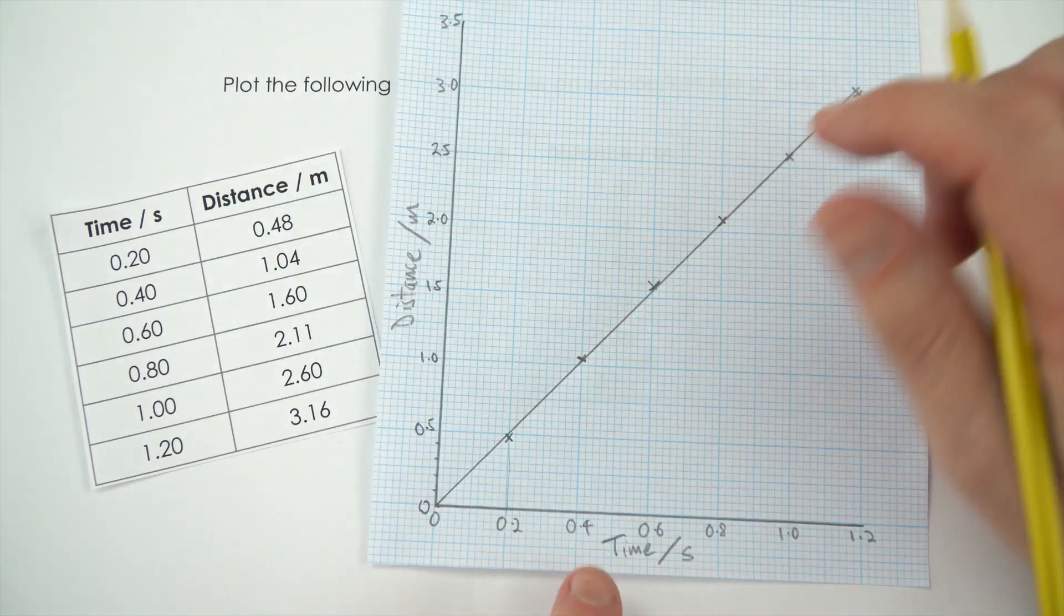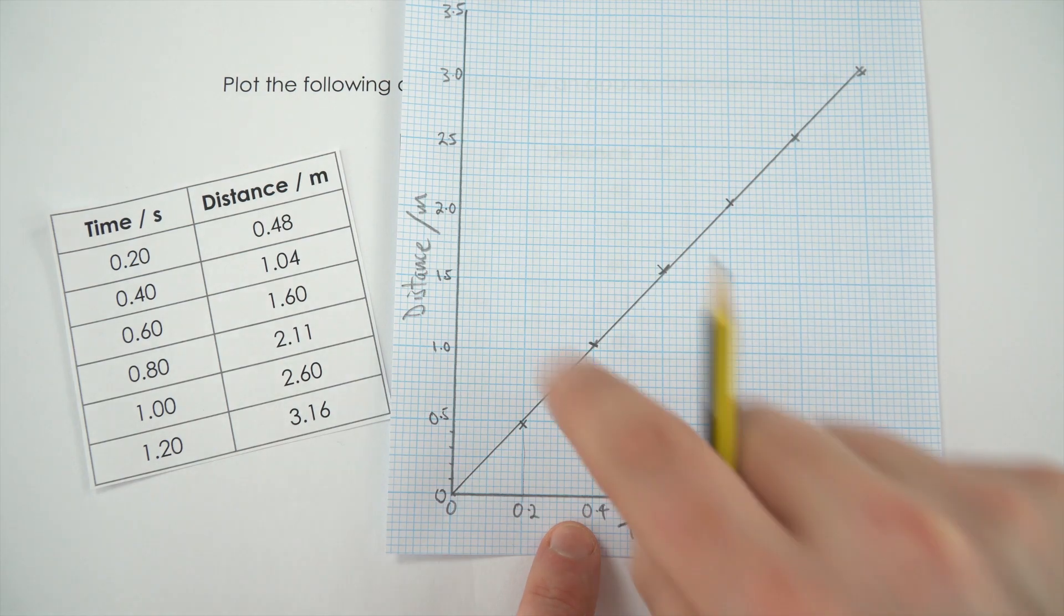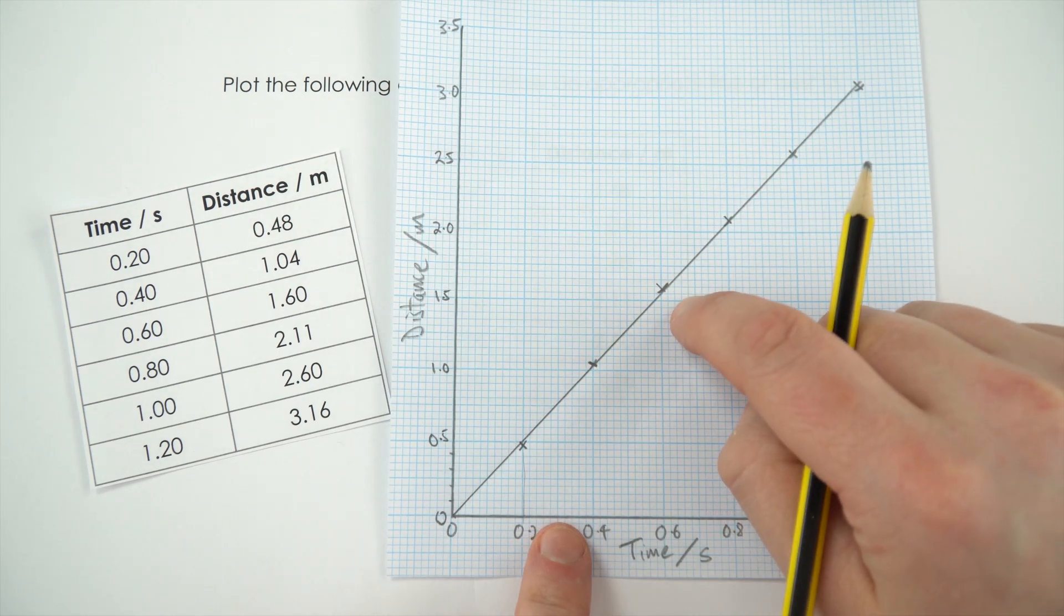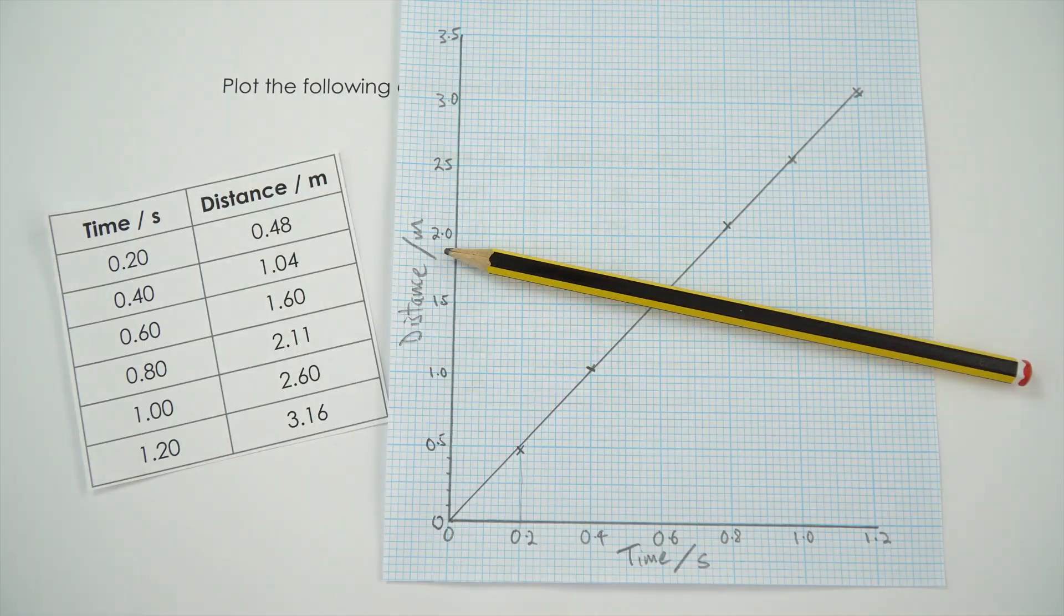So this graph here, we've got our scale chosen appropriately, we've labeled both the x and the y axis, we've plotted points precisely, and then we've done an appropriate line of best fit, all drawn in pencil. Thank you.